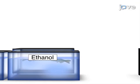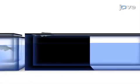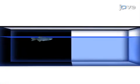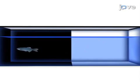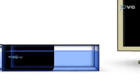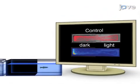Next, during withdrawal, fish are individually tested in a light/dark task using motion tracking software to record movement. The final step is to analyze the data in order to investigate the effects of ethanol withdrawal on zebrafish behavior.